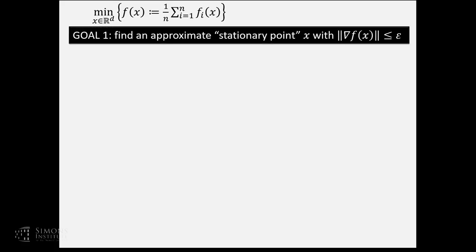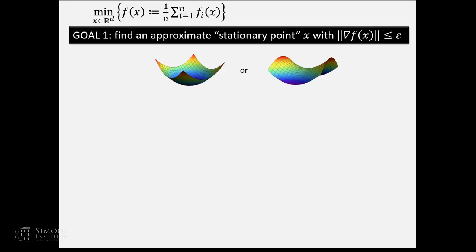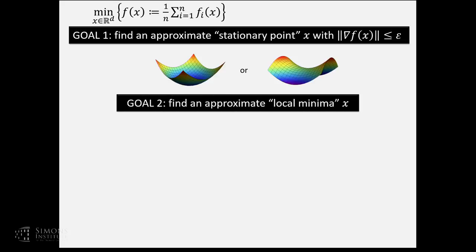In this non-convex world, what is our goal? The simplest goal is to find an approximate stationary point, meaning a point with vanishing gradient. But we know a stationary point may be either a local minima or a saddle point, and especially motivated from deep learning, saddle points are really not so great. A more ambitious goal is to find an approximate local minimum — this will be the main focus of today's talk.